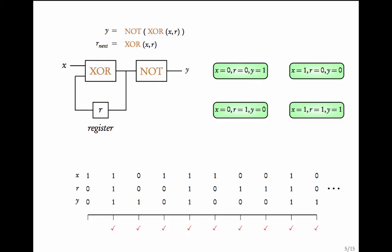What are the initial states? Initially, let us assume the register R is 0. The initial value of the input X is unknown — it could be either 0 or 1. Under this assumption, there are two initial states: the ones that have R equal to 0. We have now determined both the states and the initial states.